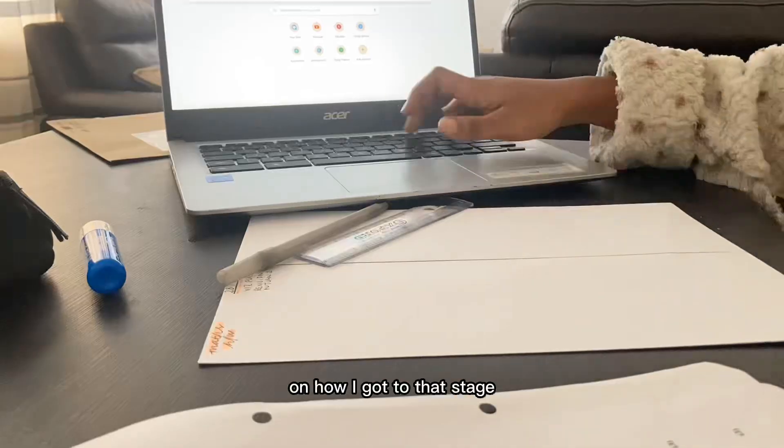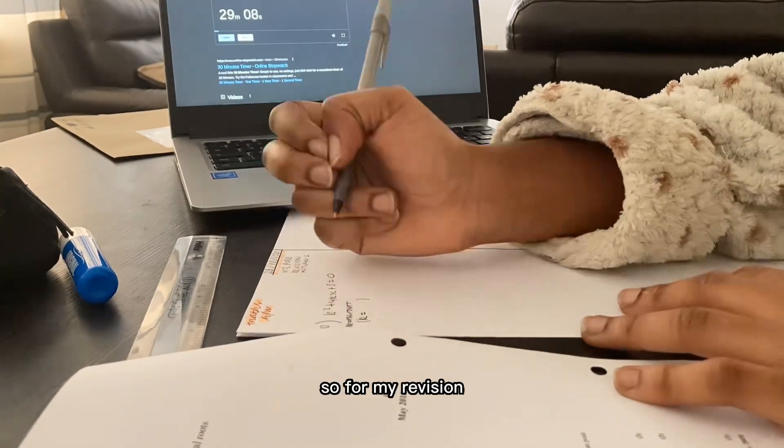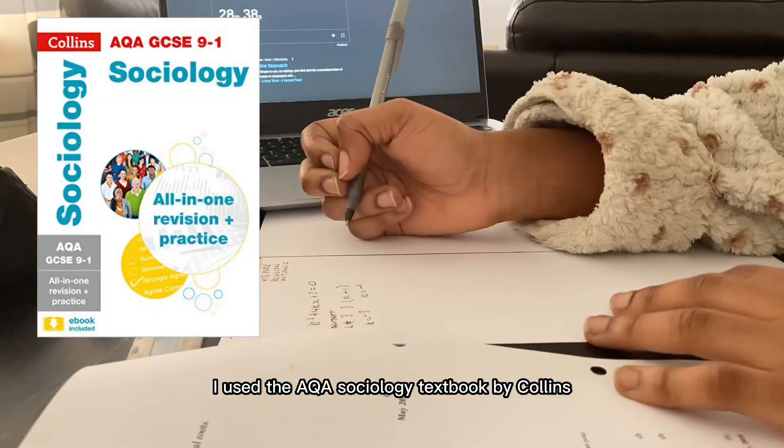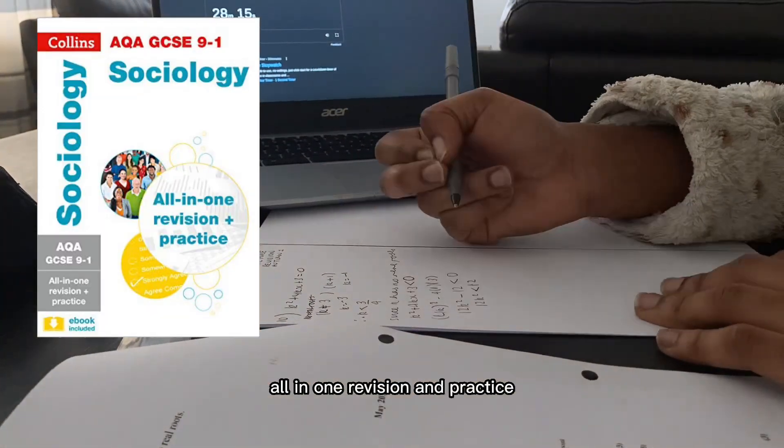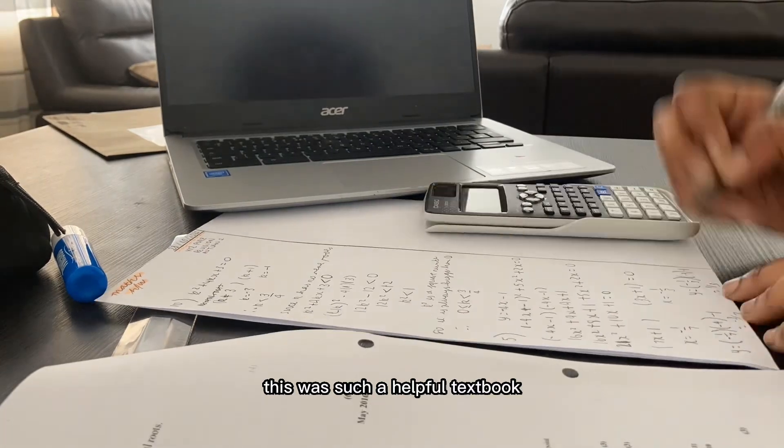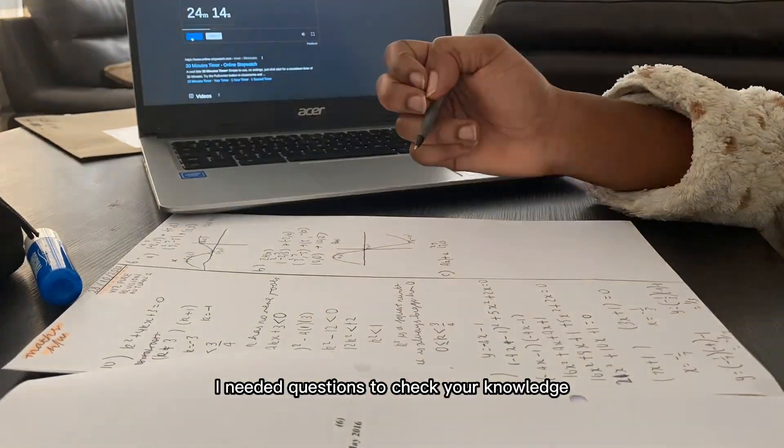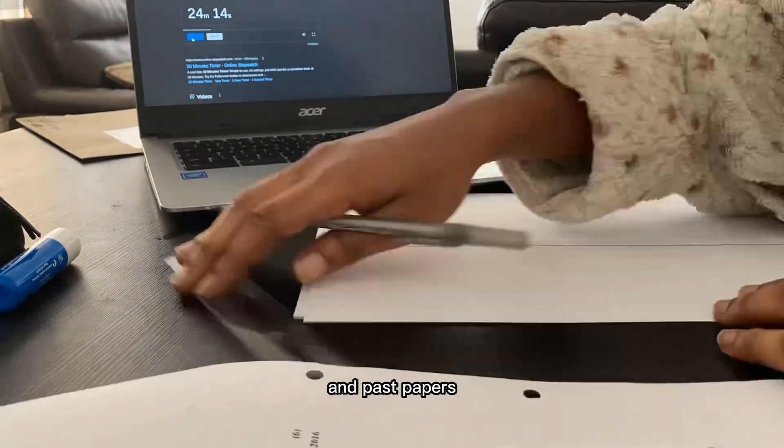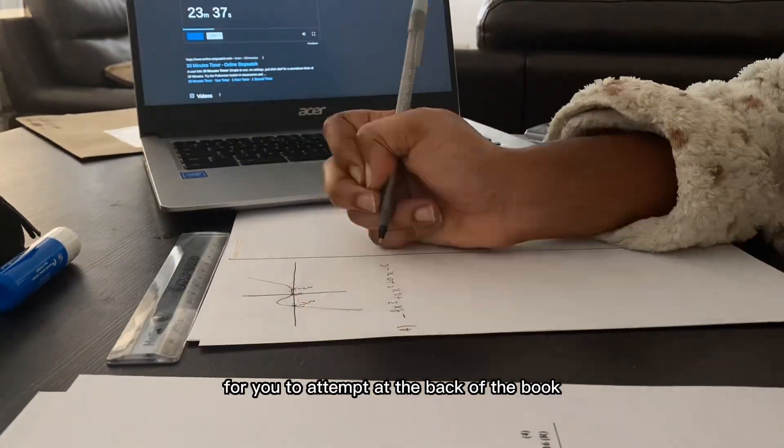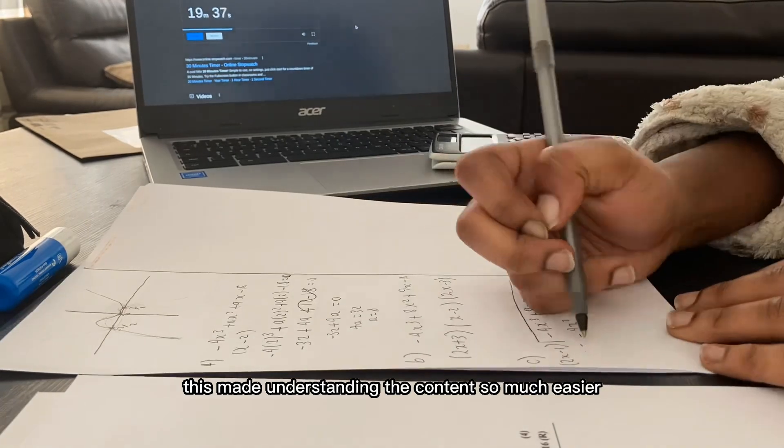For my revision, I used the AQA Sociology Textbook by Collins, All in One Revision and Practice. This was such a helpful textbook as it contained all the condensed notes I needed, questions to check your knowledge, and past papers for you to attempt at the back of the book. This made understanding the contents so much easier.